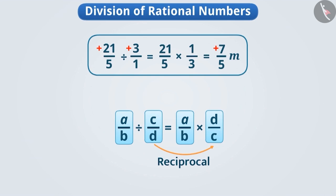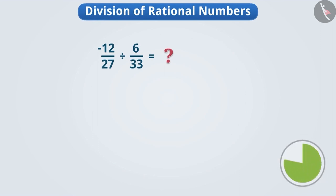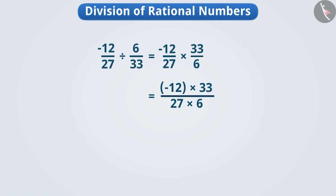Let us understand this with another example. Suppose we have to divide minus twelve by twenty-seven by six by thirty-three. We take minus twelve by twenty-seven and multiply it by the reciprocal of six by thirty-three. Since six into minus two equals minus twelve, we cancel six and write one, and cancel minus twelve and write minus two.